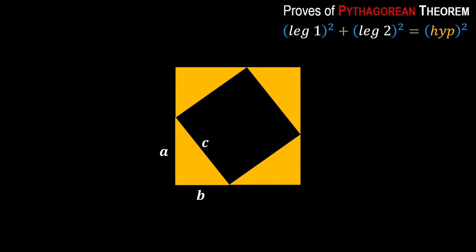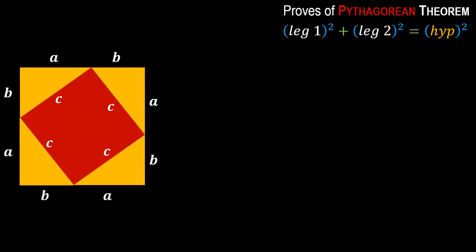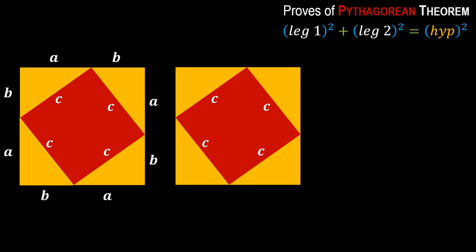Now I am labeling each side of all four triangles. You can see that in between these four triangles there is a square highlighted in red. All sides of these four triangles are labeled a, b, and c respectively. I am also taking another copy of this figure. Looking at the red square in the middle — all its sides are c, so its area is c squared.